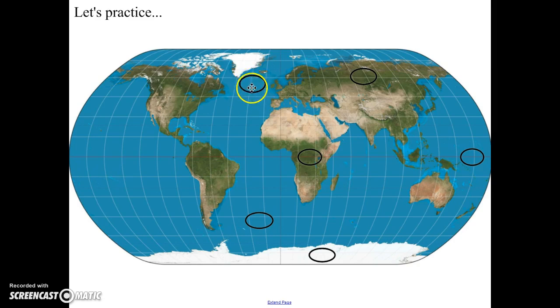So this first one is clearly over water. So it's going to be a wet air mass. And it's not near the equator. It's also not at the very top of the planet. So it's going to be cold. It's not going to be super cold. So that would be maritime polar.